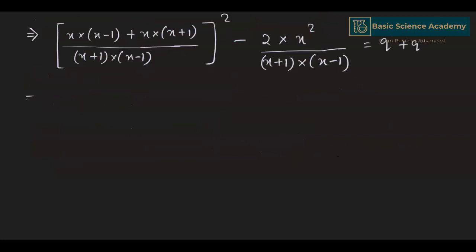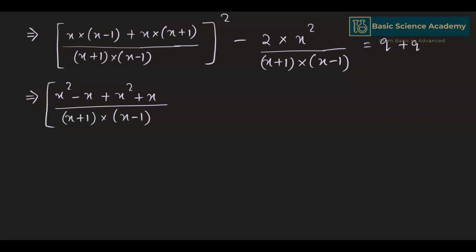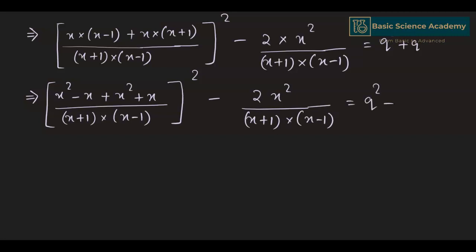Expanding the numerator: x(x-1) gives x squared minus x, and x(x+1) gives x squared plus x. Adding these gives 2x squared over (x+1)(x-1). So we have (2x squared divided by (x squared minus 1)) whole squared minus 2x squared divided by x equals q squared plus q.